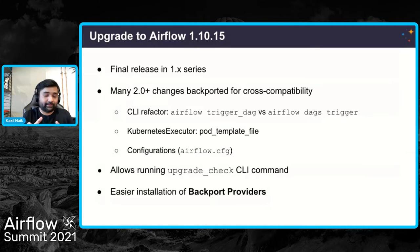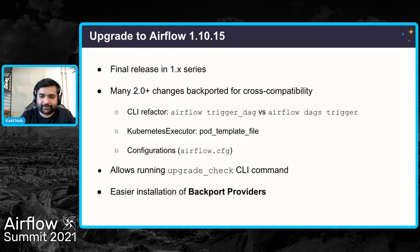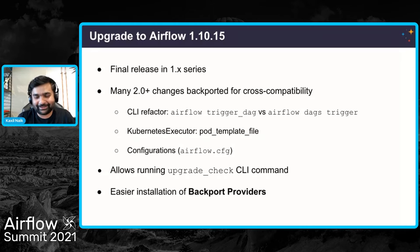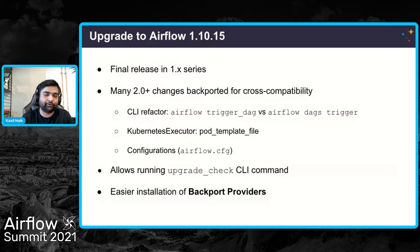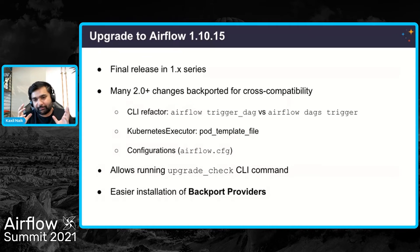Using Airflow 1.10.15, you can make all the updates you want. Both 'airflow trigger_dag' and 'airflow dags trigger' will work, giving you enough time to change CLI commands in your automation scripts. Similarly, the Kubernetes executor and Kubernetes pod operator were refactored in 2.0 to make Airflow-Kubernetes integration more powerful, and that also works in 1.10.15. Some configurations were removed or renamed, but for 1.10.15, both old and new names continue to work. Also, the backport providers work seamlessly with 1.10.15.